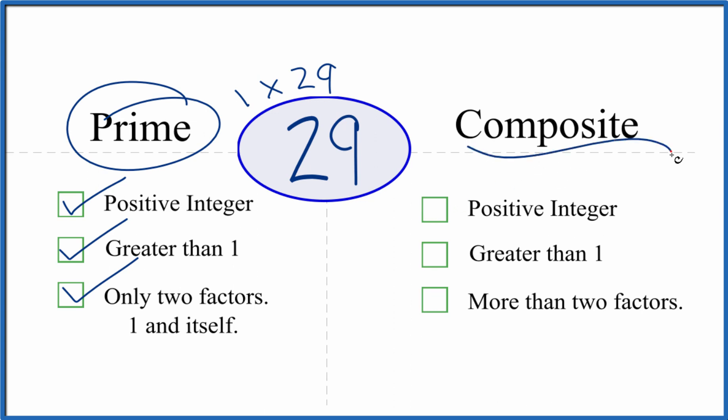But is it a composite number? Because it's a positive integer, it's greater than 1. But are there more than two factors that go evenly into 29? We just said there are only two.